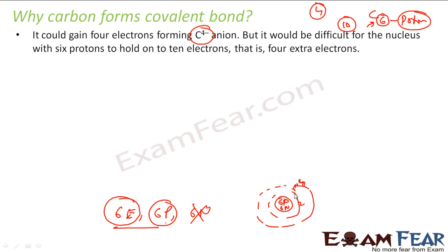At most, carbon can hold seven or eight electrons because there are only six protons. The protons must be sufficiently charged to hold the electrons — it is all about positive and negative charge. We will study this more in Class 11 when we study atomic structure. Just understand that carbon has only six protons and cannot hold ten electrons — there is a limit.